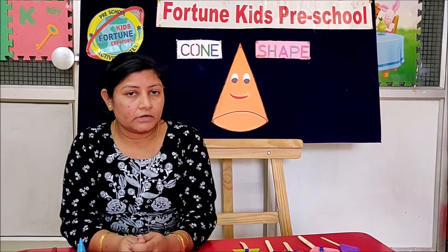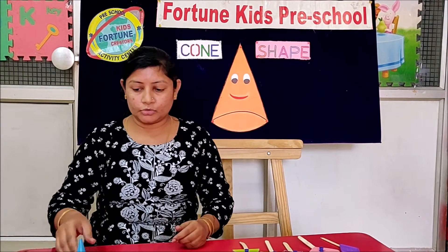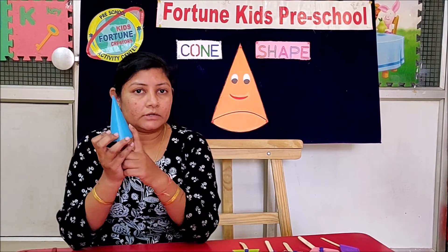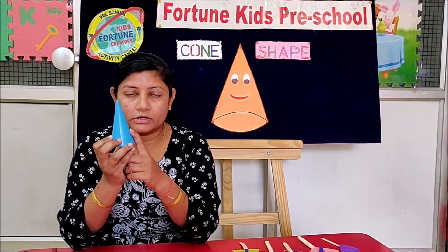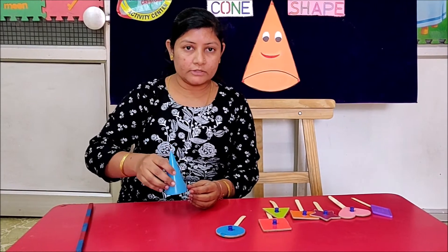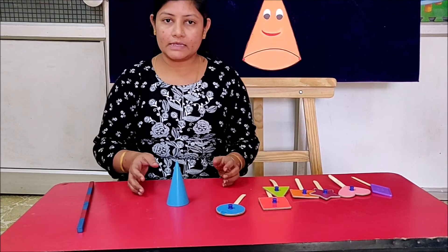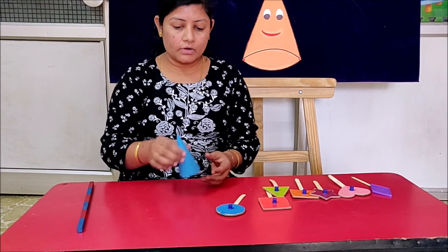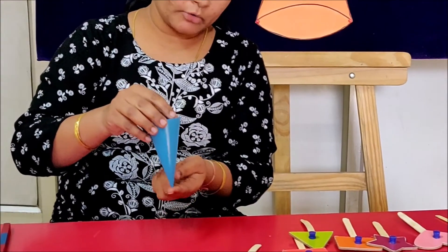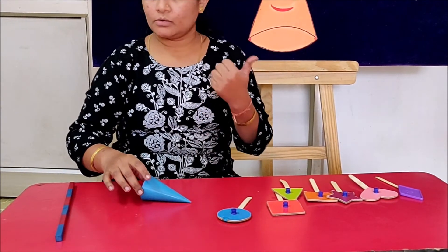Now children, how can you recognize any object that it is in cone shape or not? I will show you. This is cone shape. Now can I put it in the standing position? Let's check. Now I am putting this cone shape on the standing position from its circular base. Can I? Oh yes, I can. Now I am putting this shape from the opposite side, that is the pointed side. Can I? Oh no.